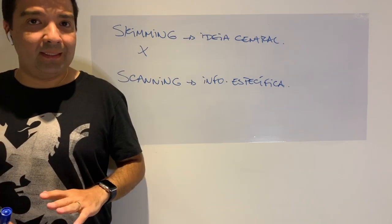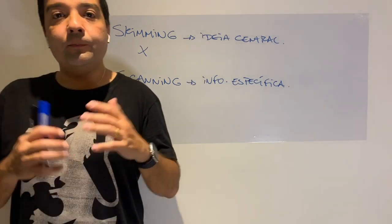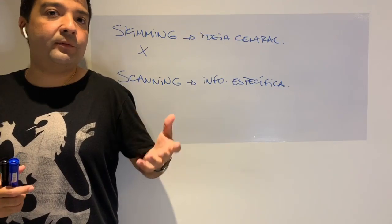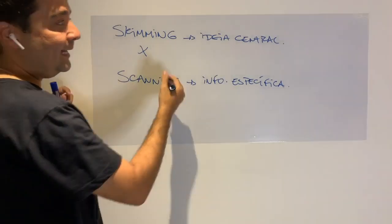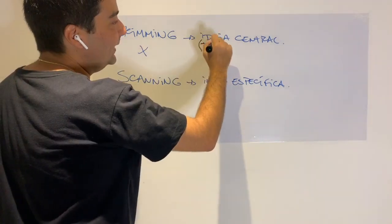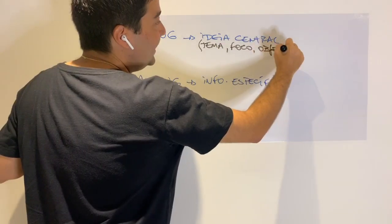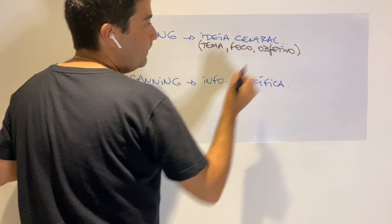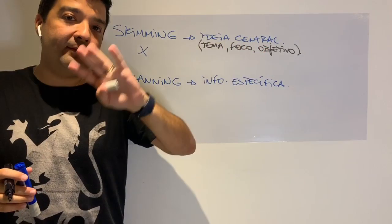O Skimming é um modo de leitura mais rápida, mais superficial, em pontos mais superficiais do texto, que vão fazer com que você consiga entender onde está a ideia central. Se o enunciado, se o comando no caso do ENEM, te pede qual é o tema, qual é o foco, qual é o objetivo, eu estou falando sobre ideia central — eu vou aplicar um Skimming, vou ler mais superficialmente.